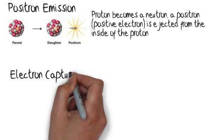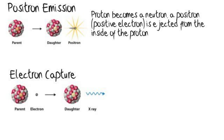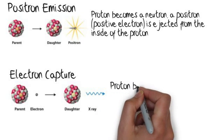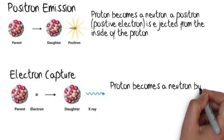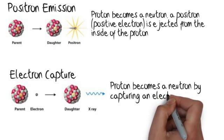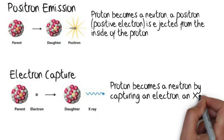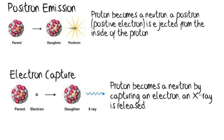In electron capture, we have a parent nucleus capturing an electron. So the proton becomes a neutron by capturing an electron. And therefore, the daughter nucleus has an atomic number one lower than the parent nucleus. Also, in electron capture, it's such a high-energy process, it produces x-rays. And the x-rays are extremely high-energy forms of light that are released in this process.